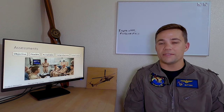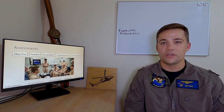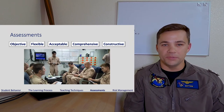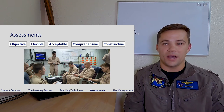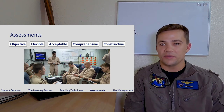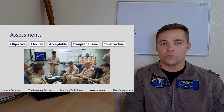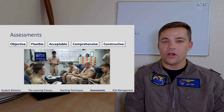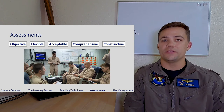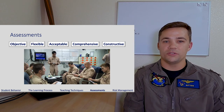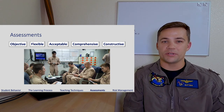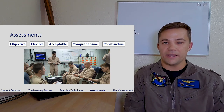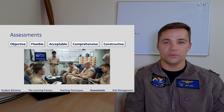When we talk about assessments, there are a couple of rules for what makes good assessments, and this applies across debriefs. They need to be objective, flexible, acceptable, comprehensive, and constructive. For objectivity, the measures of performance in our syllabi — either the .6 or the .7 curriculum — are your tools as an instructor to show that this isn't personally motivated. It doesn't have anything to do with the student's personality. It's specifically about defined standards in our curriculum guide, and whether the student did or didn't meet those standards.